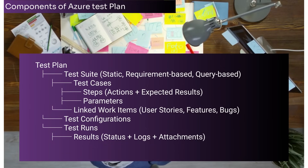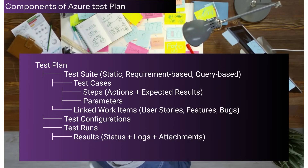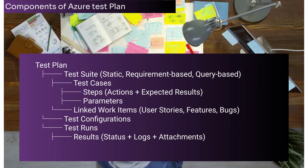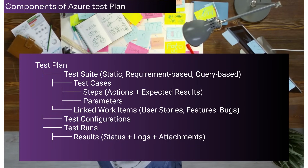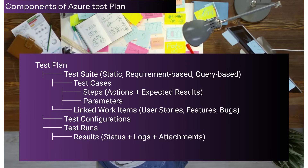Let's talk about hierarchical components. Test Plans act as a container for all the test suites and configurations related to a specific release or sprint. Attributes of a test plan include: name, description, iteration path linked to Azure Boards for sprint or release planning, and area path linked to features or modules under test.